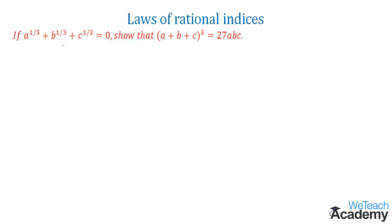We have the condition a power 1 by 3 plus b power 1 by 3 plus c power 1 by 3 is equal to 0. Let us transfer c power 1 by 3 to the right hand side. We get a power 1 by 3 plus b power 1 by 3 is equal to minus c power 1 by 3.